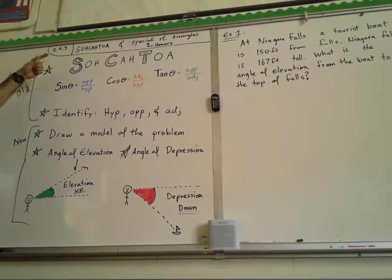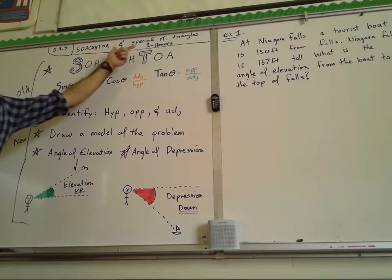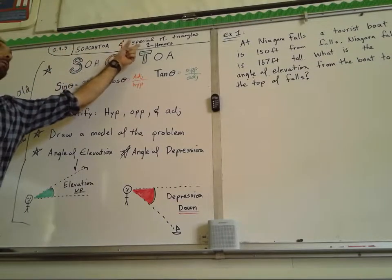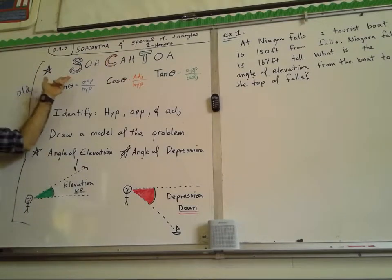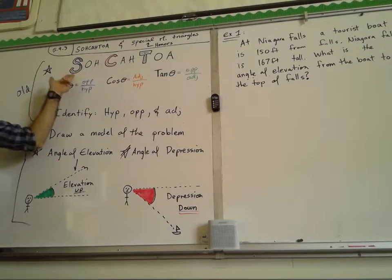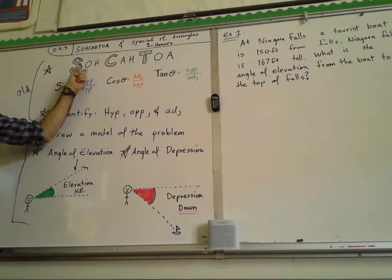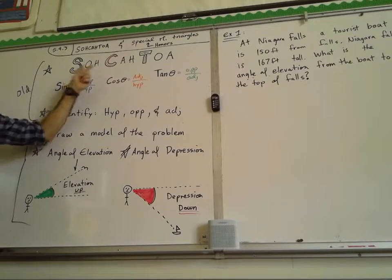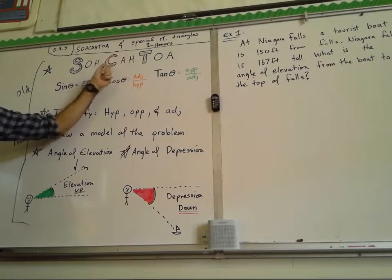So this is lesson 5.9.3. The next lesson, which I'll put on a separate video, is on special right triangles. SOH-CAH-TOA tells us that if the opposite and hypotenuse of a right triangle are involved, we use sine. If adjacent and hypotenuse, we use cosine. If opposite and adjacent, we use tangent.